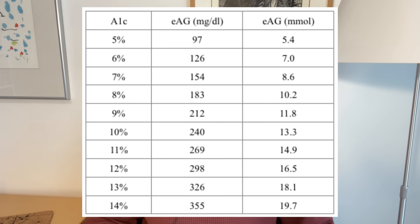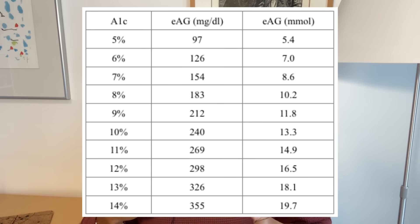I had a chance to interview Dr. Ann Peters, a professor of medicine at the Keck School of Medicine of USC and director of the USC clinical diabetes programs. Her perspective is that A1C targets should be adjusted for the individual — for example, someone who's pregnant might want to keep A1C at 6% or below, while an older person's target should be higher. She finds that an A1C target of 6–7% is ideal, and that going below 7% has fairly little impact on complications, so a very low A1C shouldn't be an end goal if achieved through a lot of low blood sugars.